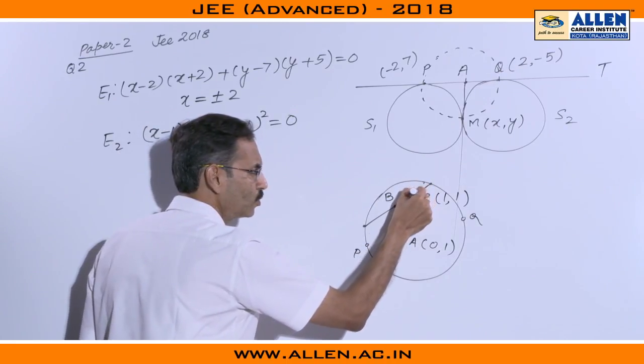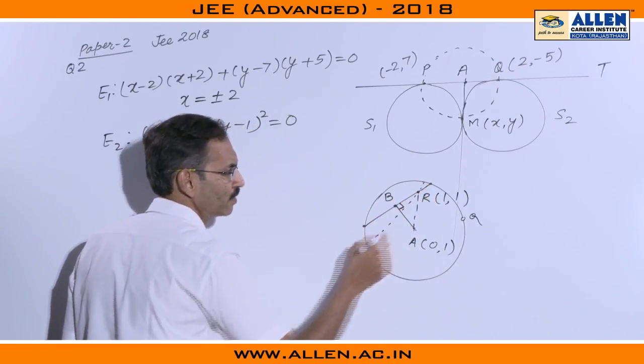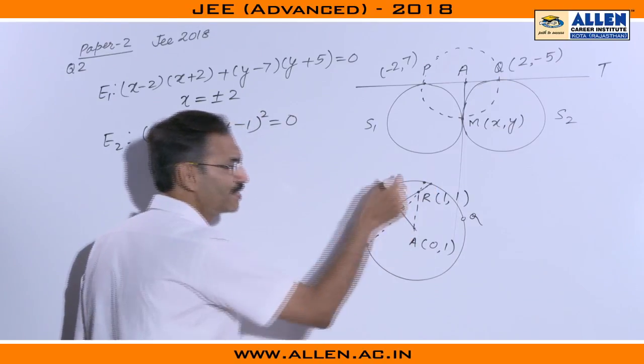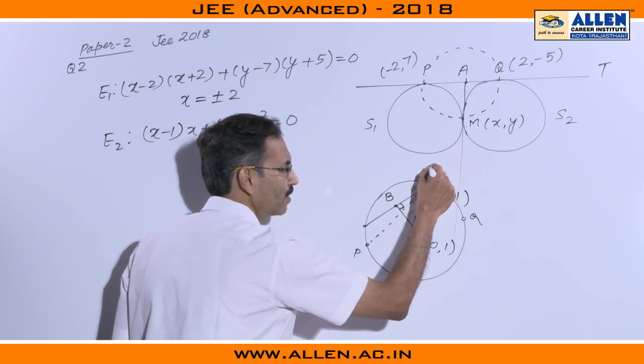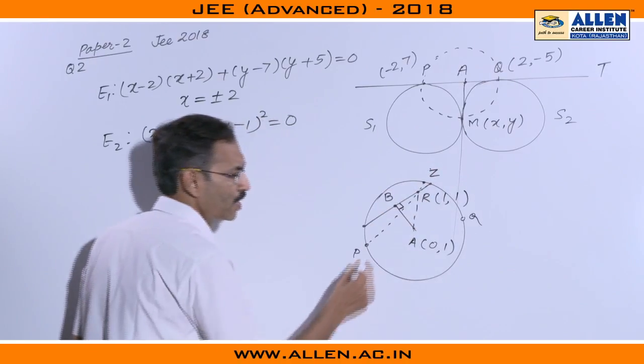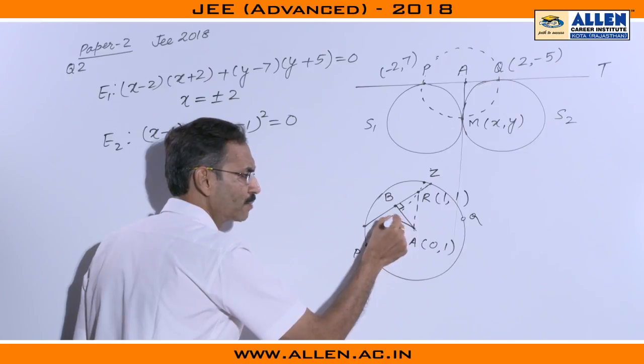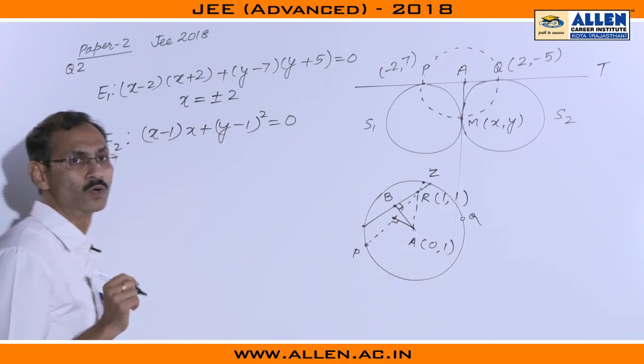The line which is passing through this point P, this is also a line segment, let us consider this point as say Z. So the foot of perpendicular from A on this line segment is not part of the locus.